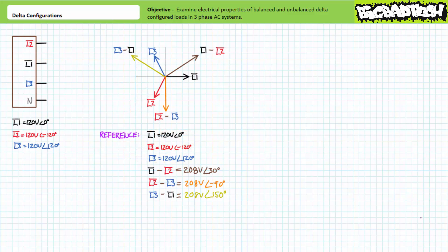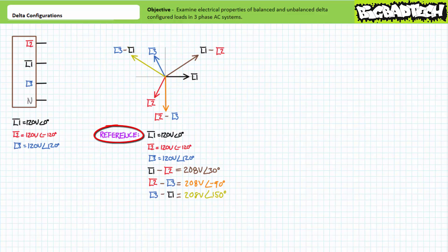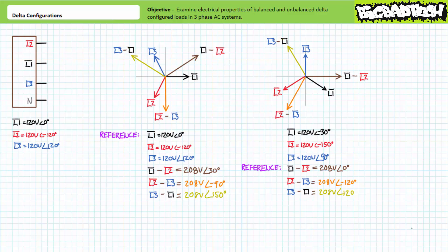If we didn't like phasors and wanted to use a shortcut, we could say that each line-to-line differential is square root three, or roughly 1.73 times larger, and offset by 30 degrees from the nearest line-to-neutral differential. Either method — phasor math or the shortcut — yields the same result. We can center these resultant phasors on the origin of our phasor diagram. Note both the line-to-neutral and the line-to-line differentials each exhibit a relative phase shift of 120 degrees from each other: 120 degrees separates L1 from L2, L2 from L3, and L3 from L1. Similarly, a relative 120 degrees separates L1 with respect to L2 from L2 with respect to L3, and so forth. Assuming we choose L1-L2 as our reference, L1-L2 would be 208 volts at an angle of zero degrees; L2-L3 is 208 volts at an angle of negative 120 degrees; and L3-L1 is 208 volts at an angle of 120 degrees.